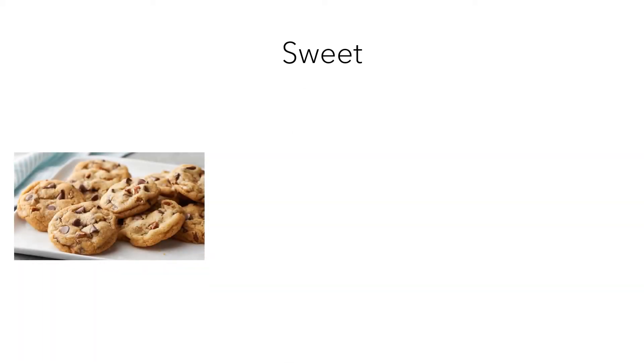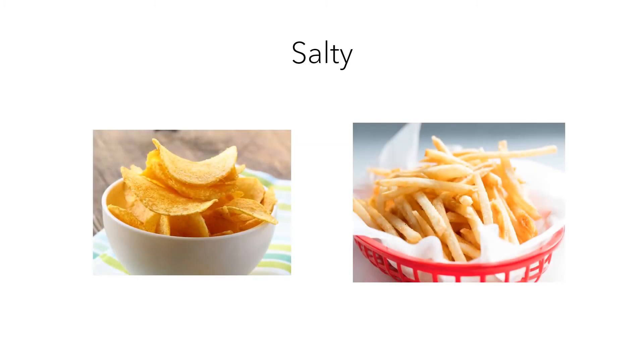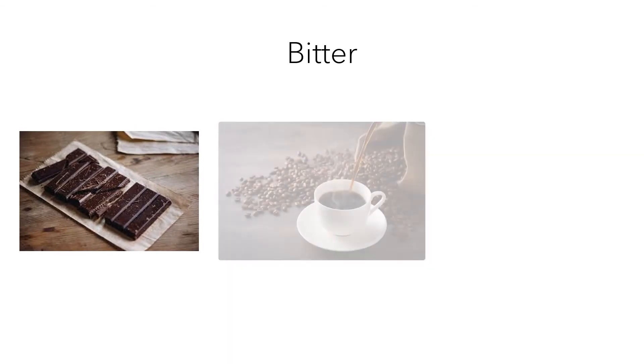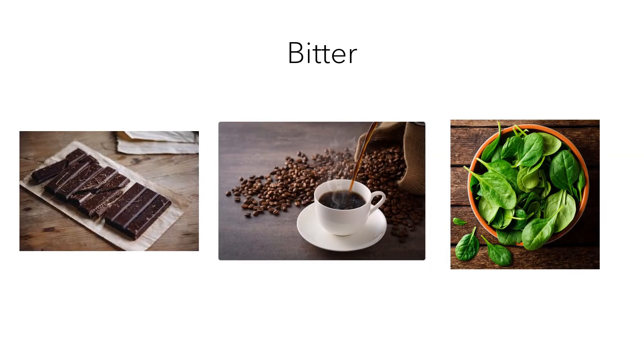The first taste is sweetness. This allows us to taste things like the sugar in our cookies, the honey in our tea, or the strawberries on top of our yogurt. The second taste is saltiness. This allows us to taste the salt on our potato chips or on our french fries. The third taste is bitterness. We can taste bitterness in our dark chocolate bars, in our freshly brewed coffee, or in the spinach in our salads.